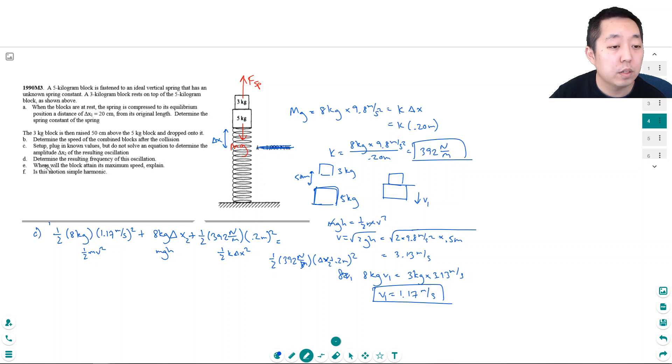Then part D: determine the resulting frequency of this oscillation. Well, we know the period is equal to 2 pi square root of m over k, so that's 2 pi root 8 kilograms over 392 newtons per meter. This would be in seconds, and f is just 1 over T. So I'm going to do 1 over all of this, so 2 pi square root of 8 divided by 392, then 1 divided by that is 1.11 hertz. Units of frequency is hertz or seconds inverse.